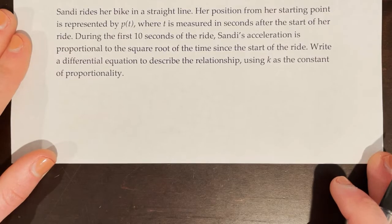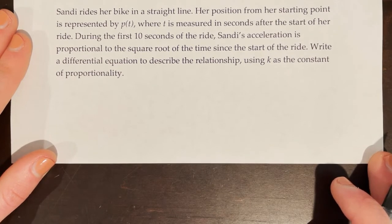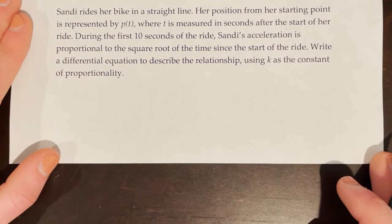Sandy rides her bike in a straight line. Her position from her starting point is represented by p of t, where t is measured in seconds after the start of her ride. During the first 10 seconds of the ride, Sandy's acceleration is proportional to the square root of the time since the start of the ride. Write a differential equation to describe the relationship, using k as the constant of proportionality.